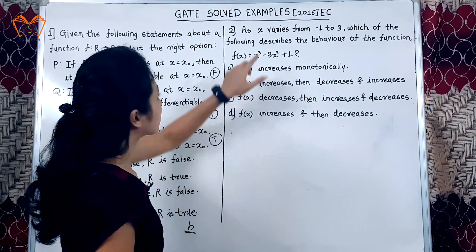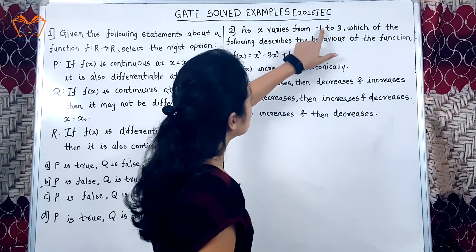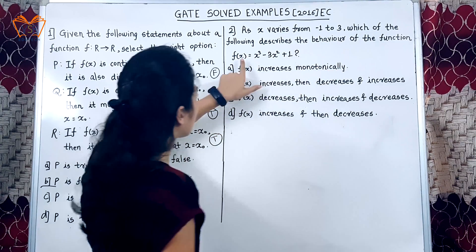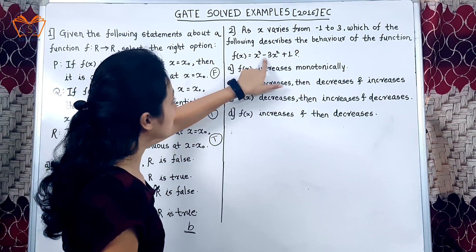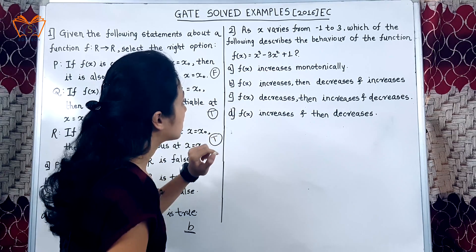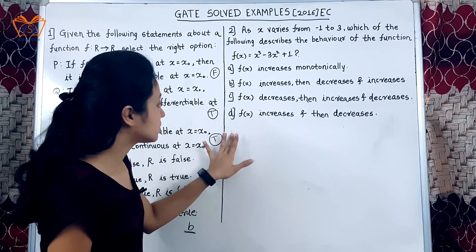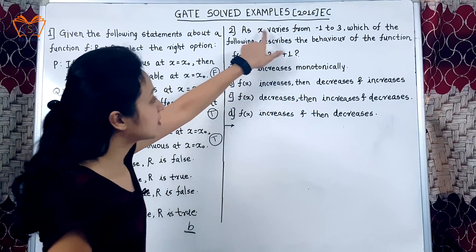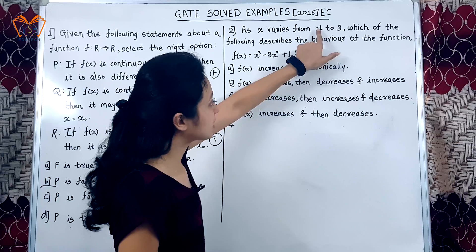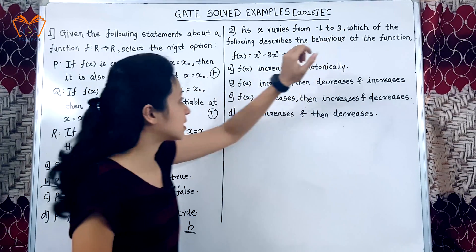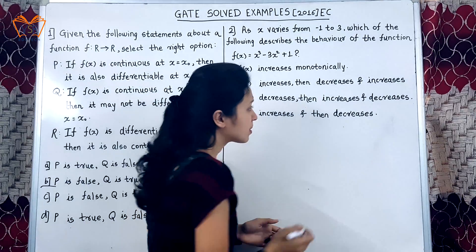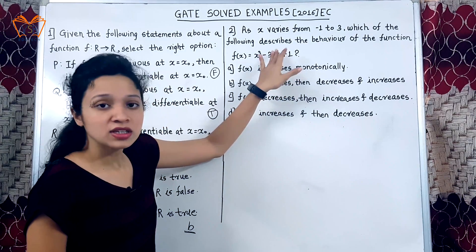The second example, as x varies from minus 1 to 3, which of the following describes the behavior of function? f of x is equal to x cubed minus 3x squared plus 1. I will not read the given options. First, we will go directly for the example. Now, what they have given? They have given the range of x that varies from minus 1 to 3 and they have defined one function.